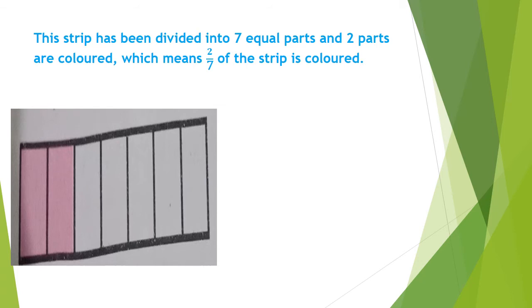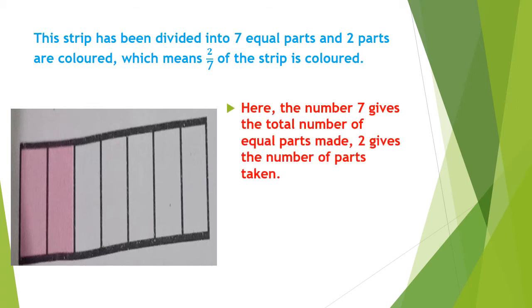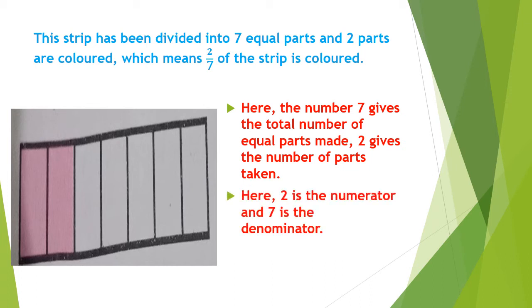Look at this strip. It is divided into seven equal parts and two parts are colored, which means two upon seven of the strip is colored. The number seven gives the total number of equal parts made, and two gives the number of parts taken. Two is the numerator and seven is the denominator.